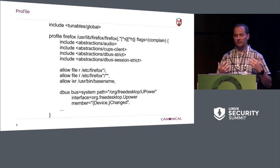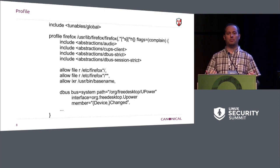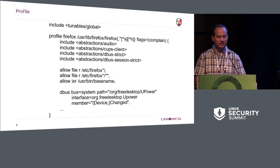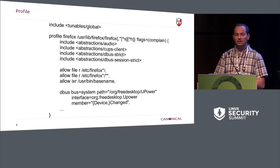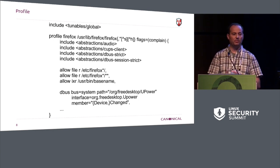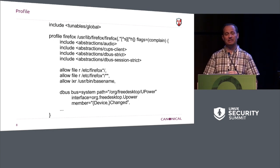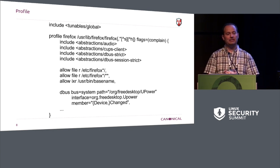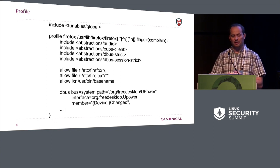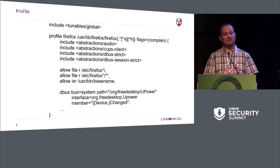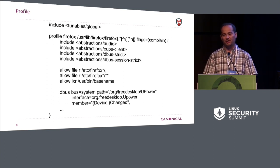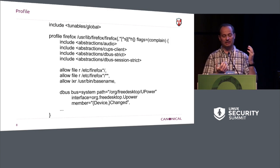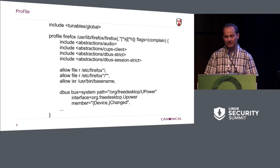The base unit of an AppArmor mediation policy is a profile. A profile is just a text blob with a little bit of language. It's very similar to what a user would expect to see. Some of the syntax comes from 20 years ago — C programs — so you're seeing 'include' and stuff like that as part of the syntax.